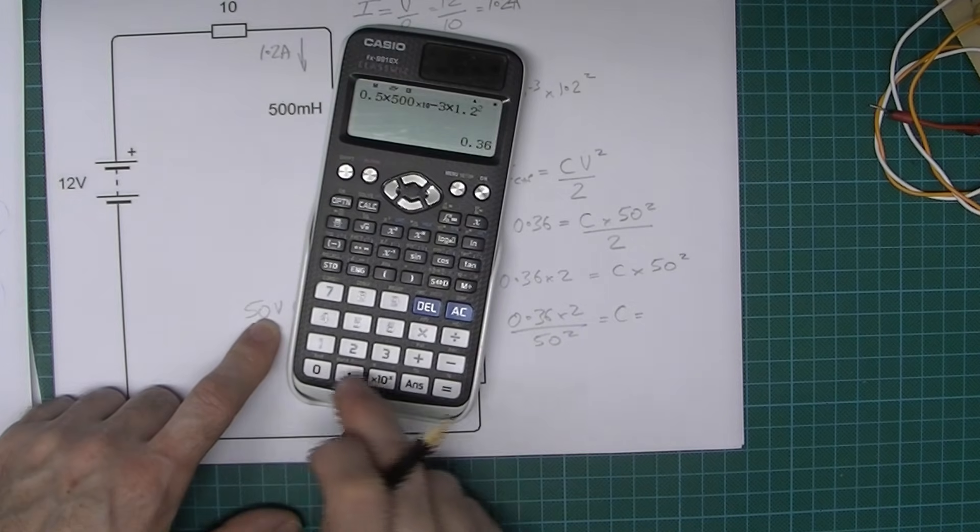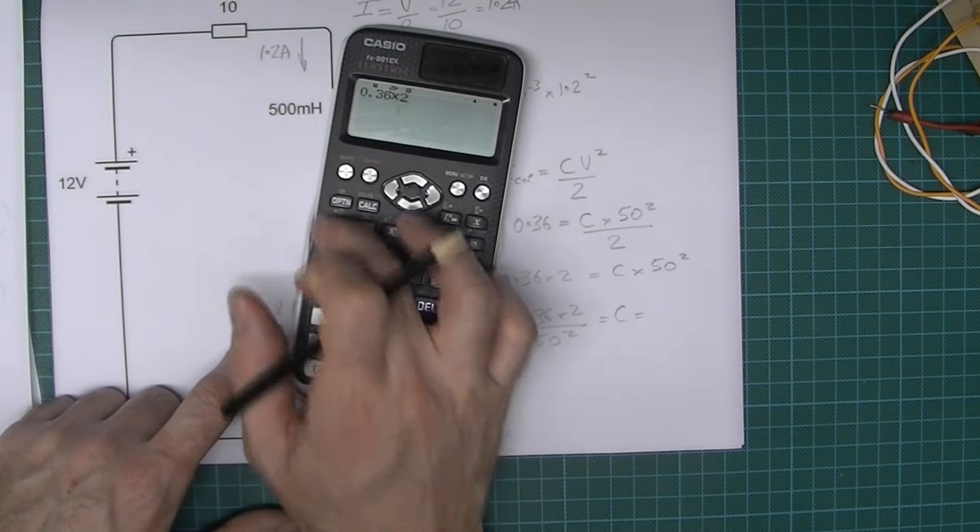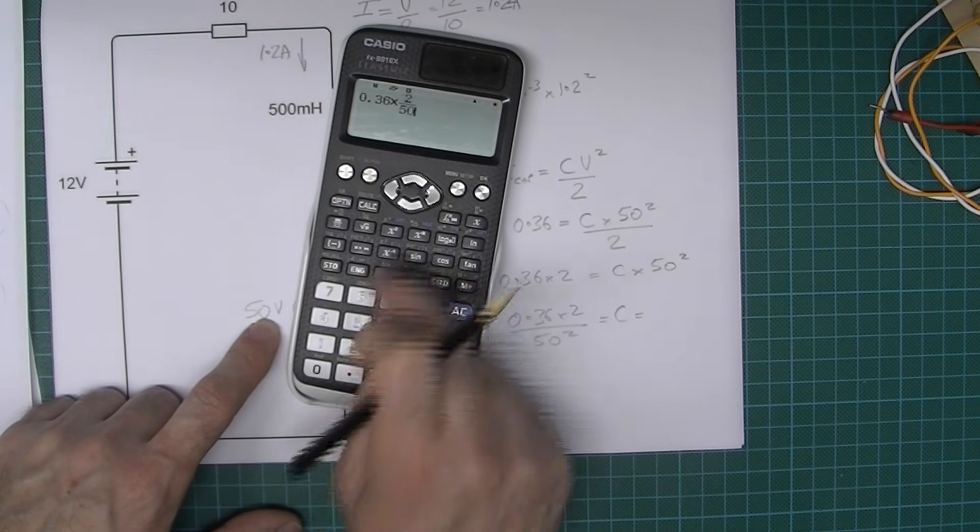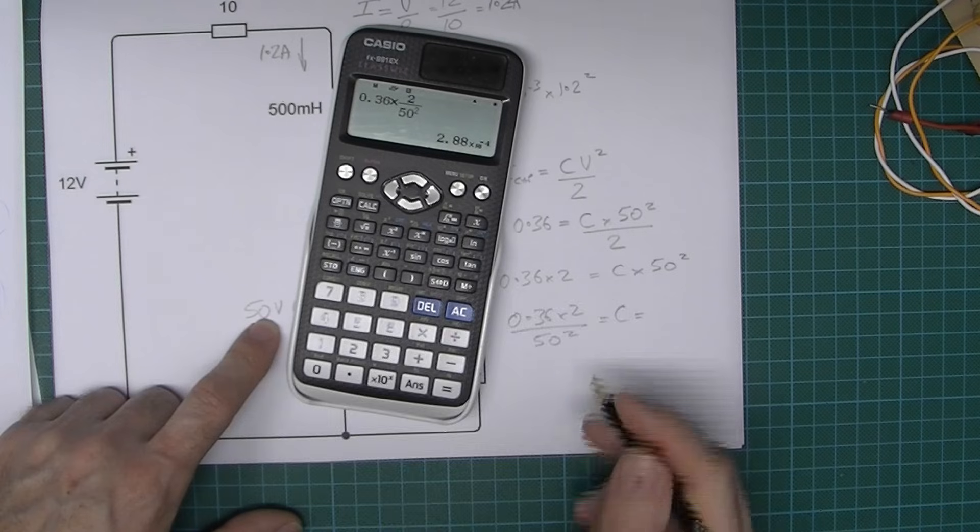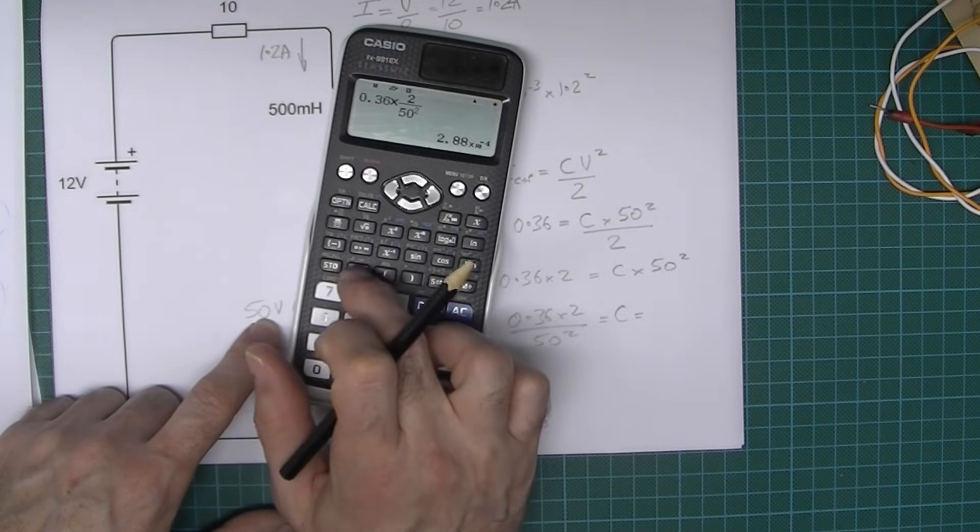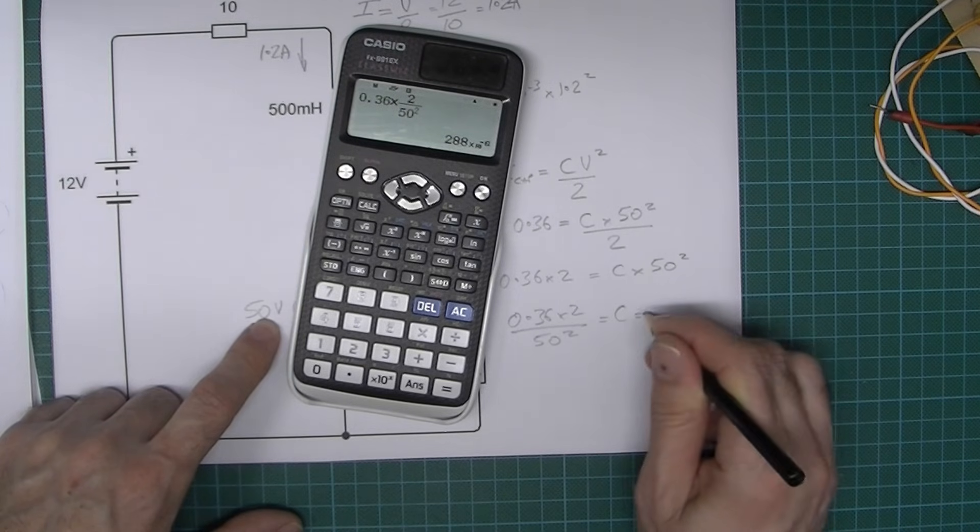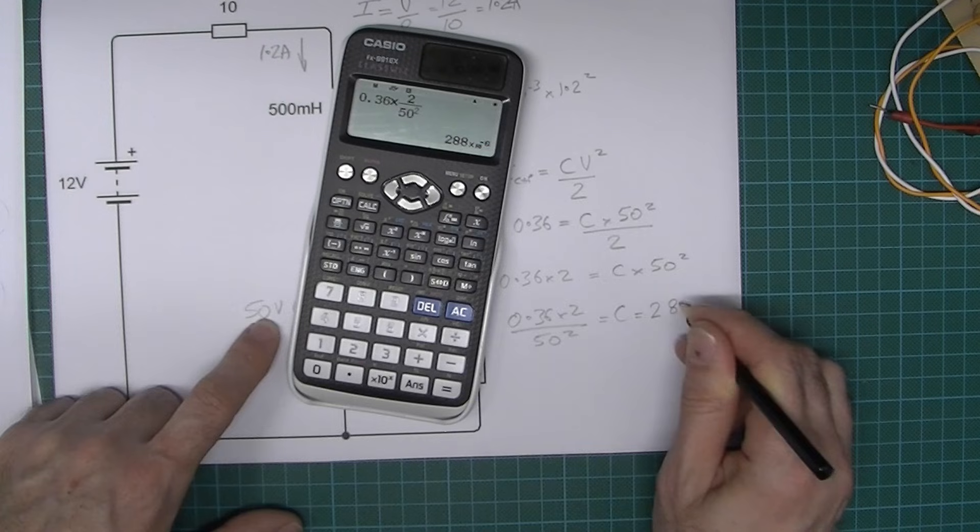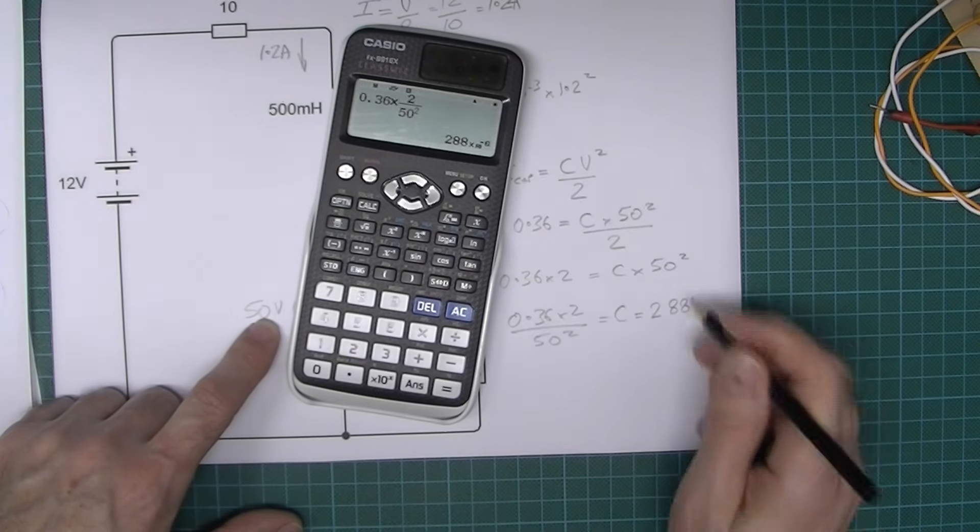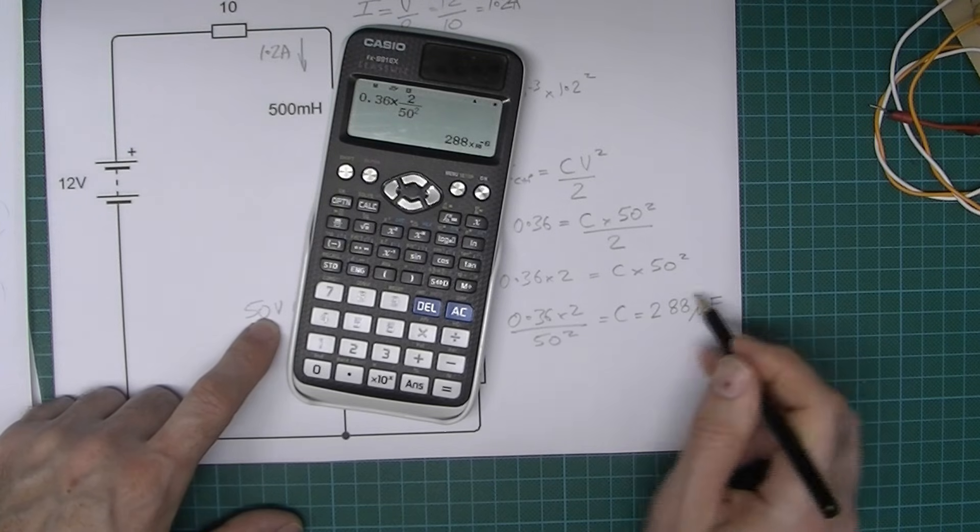Let's do that: 0.36 times 2 over 50 squared equals 2.88 times 10 to the minus 4. I'm going to click the engineering units there, so that's going to give us 288 times 10 to the minus 6. So that is microfarads of capacitance - 288 microfarads.